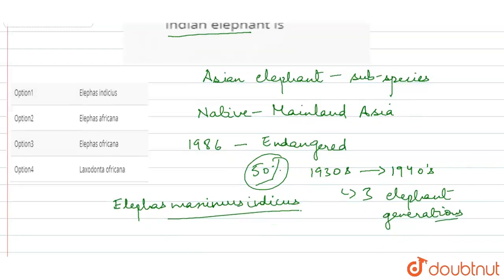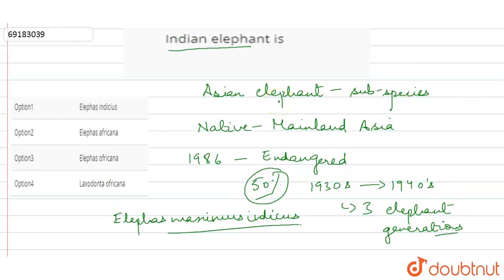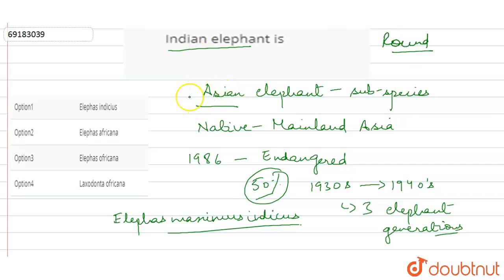The scientific name is Elephas Maximus Indicus. This is a mammal class, Kingdom Animalia. The Asian elephant is different from the African elephant — the Asian elephant is smaller in size, and the Indian elephant's neck is convex or round.